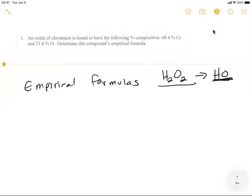So I have a question up here, and this is a very typical empirical formula kind of calculation question, which says an oxide of chromium is found to have the following percent composition, 68.4% chromium, 31.6% oxygen. Determine this compound's empirical formula. Okay. Step one is you change, you literally change the percent sign to grams. So I'm going to start with 68.4 grams of chromium and 31.6 grams of oxygen. That's like, you're just changing the symbol next to it.